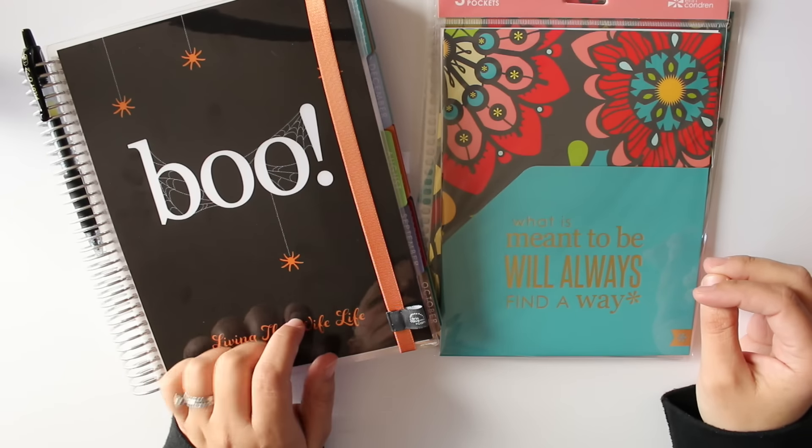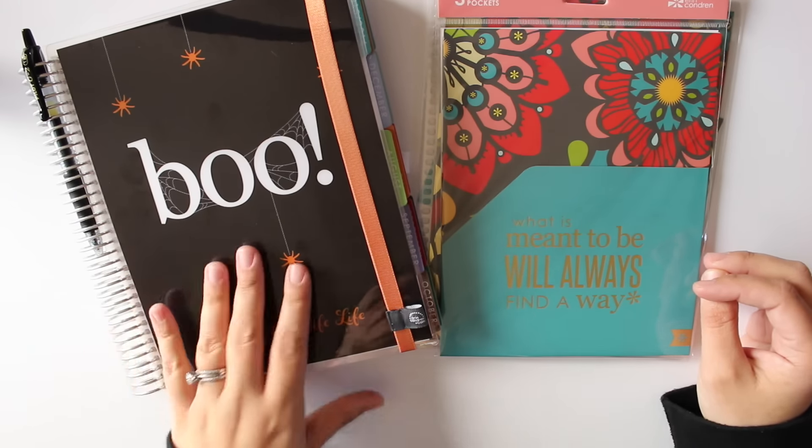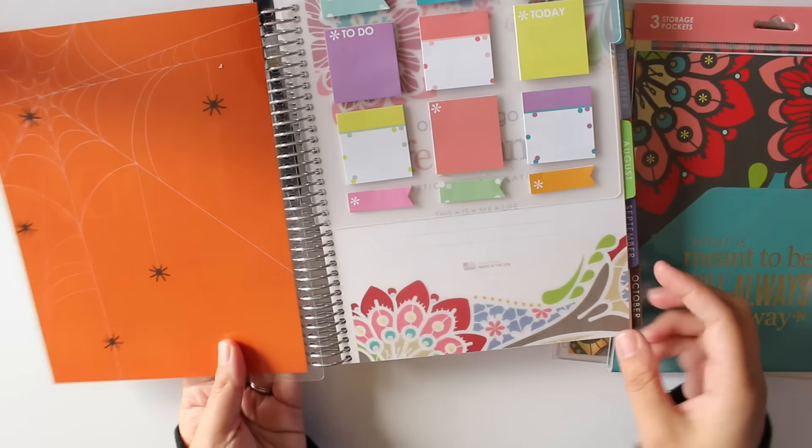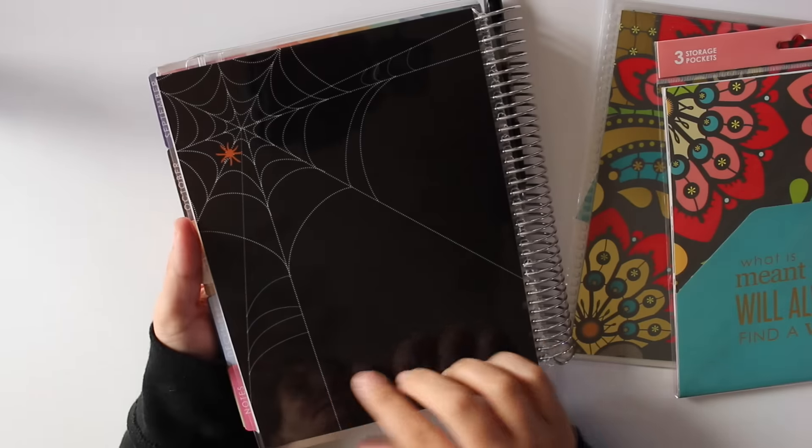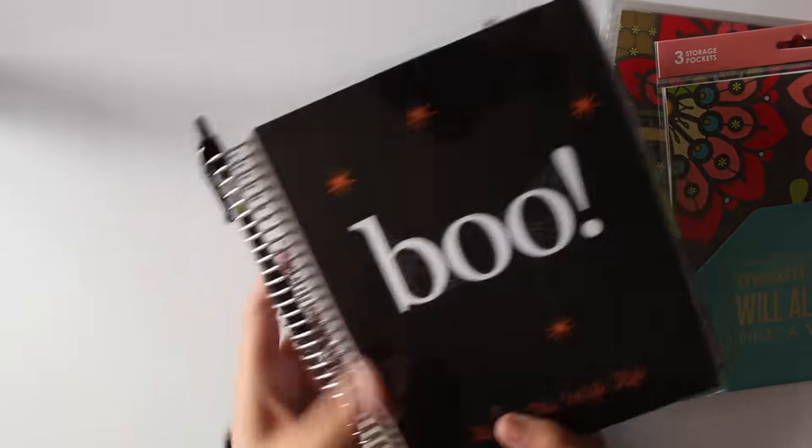The first thing I wanted to show you was the cover that I am currently using, which is the Boo cover from Erin Condren. It's really cute. I'll show you the inside of it too. It's just got orange with little spiders in the back. It has a spider web, and again, orange with spiders. I think these are still available on ErinCondren.com. I'll leave a link to Erin Condren, as always, below.